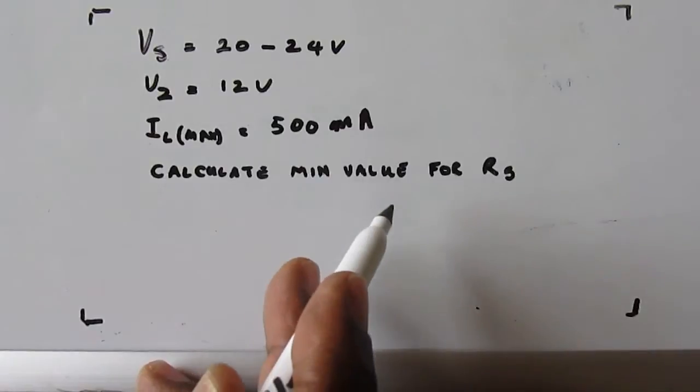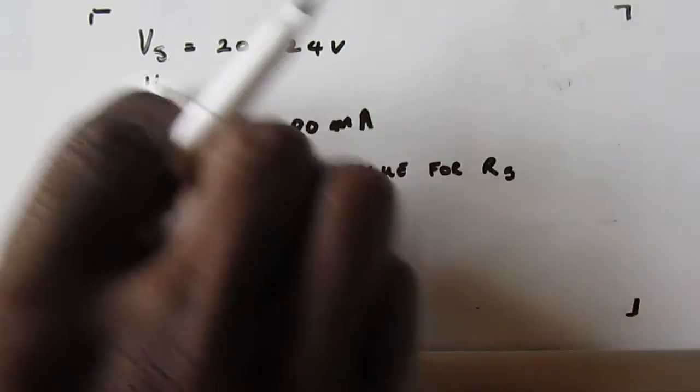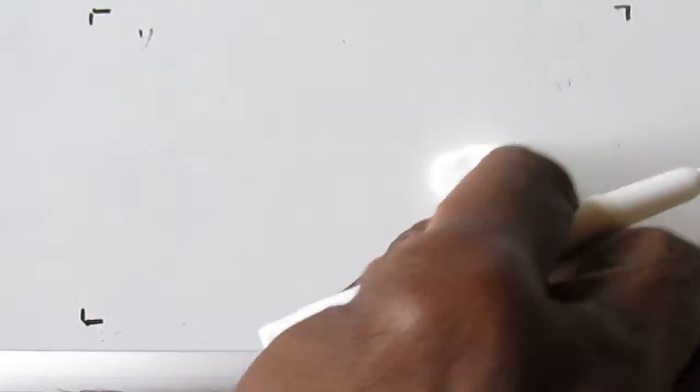And we are required to calculate the minimum value for RS for the circuit to function correctly. So first of all, we are going to draw the circuit.